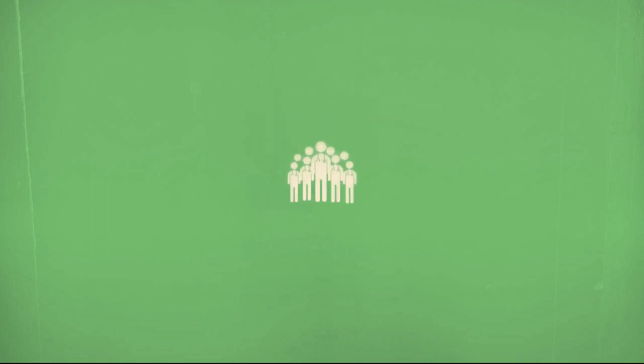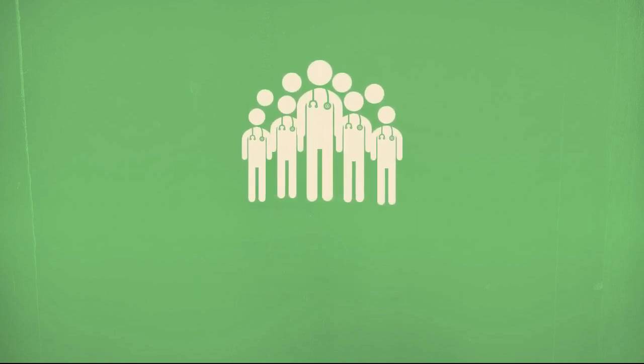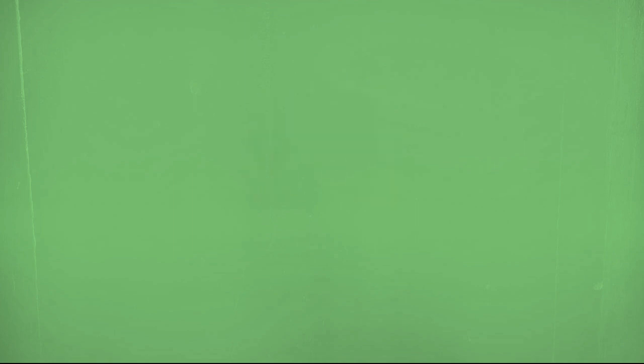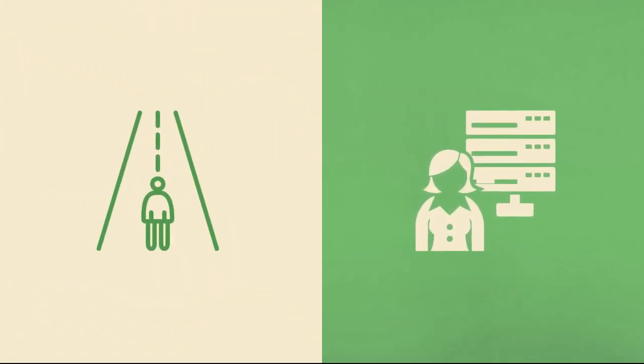Information communities might be formal, such as a professional organization for doctors, or informal, such as a group of friends who enjoy the same activity. They include people with different levels of experience, including novices and experts, and sometimes people who think they are experts when they're not.